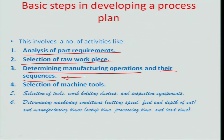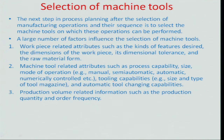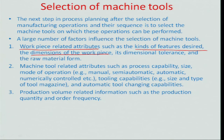We also discussed the selection of machine tools and some of the criteria used therein, which involves selection based on process capability analysis of a machine. In that context, we began analysis of how we really do the selection based on workpiece-related attributes, such as the kind of features desired in the final drawing, the dimensions of the workpiece, its dimensional tolerances, and the raw materials, and so forth.